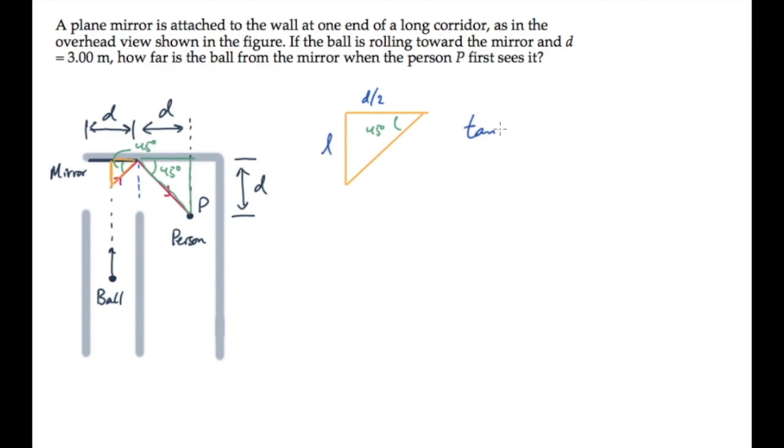We can find it using the tangent of that 45 degree angle. We know tangent of 45 degrees equals 1. It also equals the ratio of the opposite side to the adjacent, that's L over d over 2. Solve this for the length L to find that the person first sees the ball when it's a distance d over 2 from the wall, that's 3 meters over 2, or 1.5 meters.